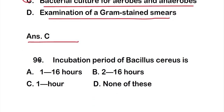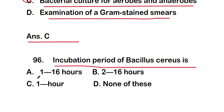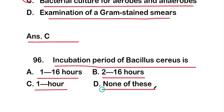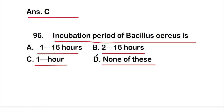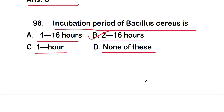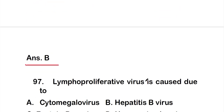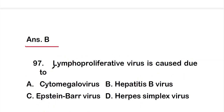Question number 96: the incubation period of Bacillus cereus is option A, 1 to 16 hours; option B, 2 to 16 hours; option C, 1 hour; or option D, none of these. The right answer is option B — 2 to 16 hours is the incubation period of Bacillus cereus.